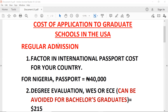So for regular admission, the first thing you have to do is sort out your international passport. The cost depends on which country you're from. For Nigeria, since I'm making this video specifically for people who ask me questions in Nigeria, the passport is about 30 to 40,000 Nigerian Naira.